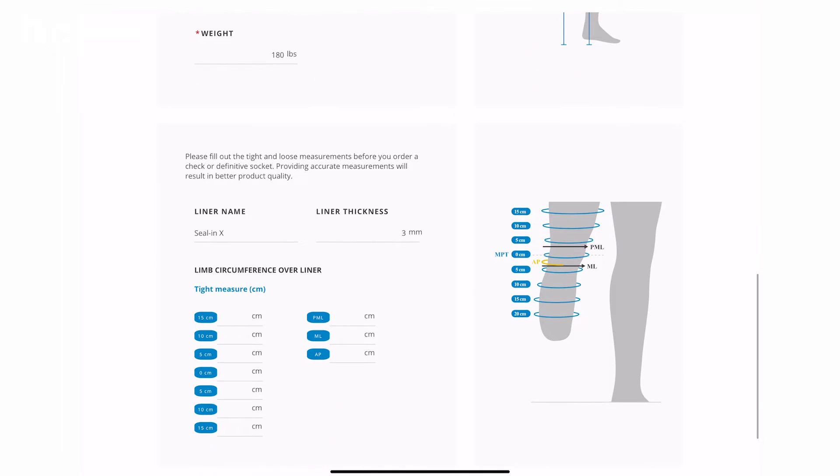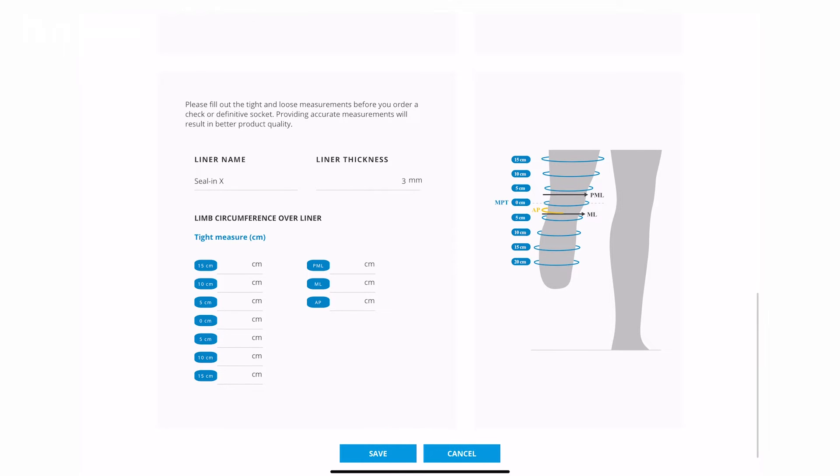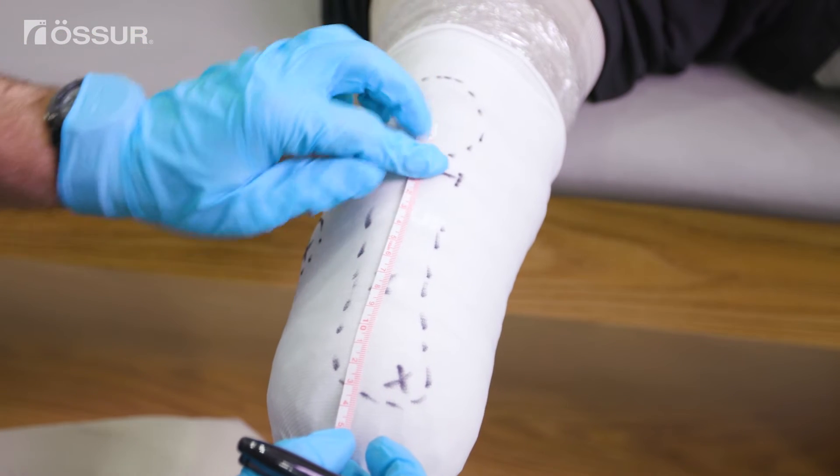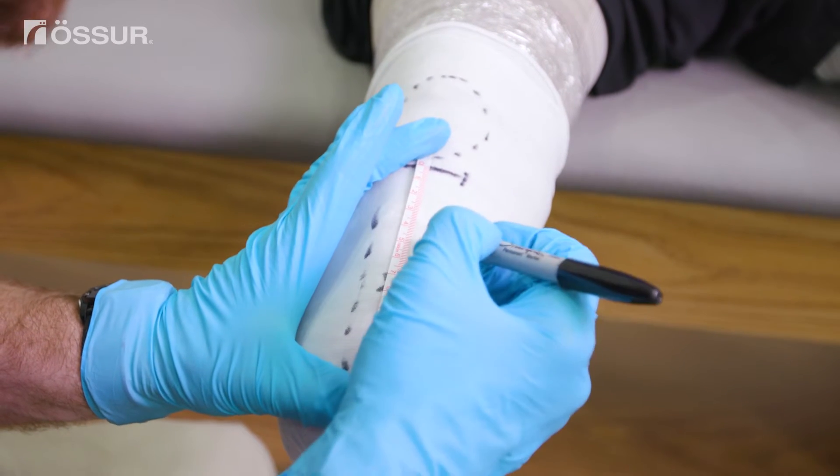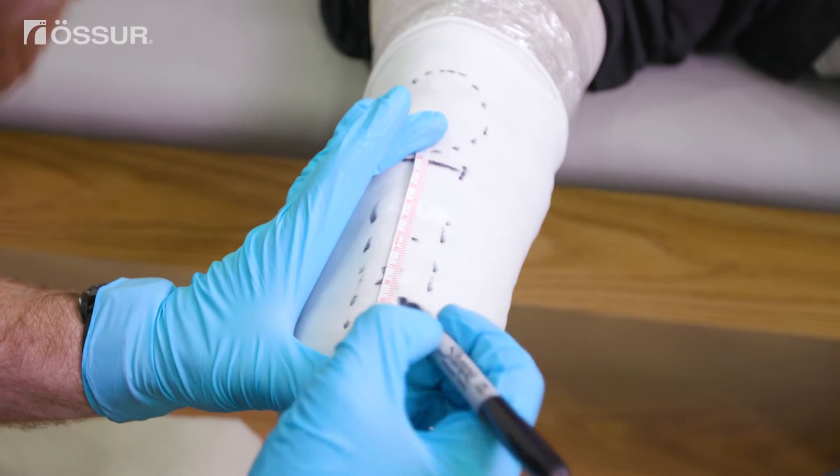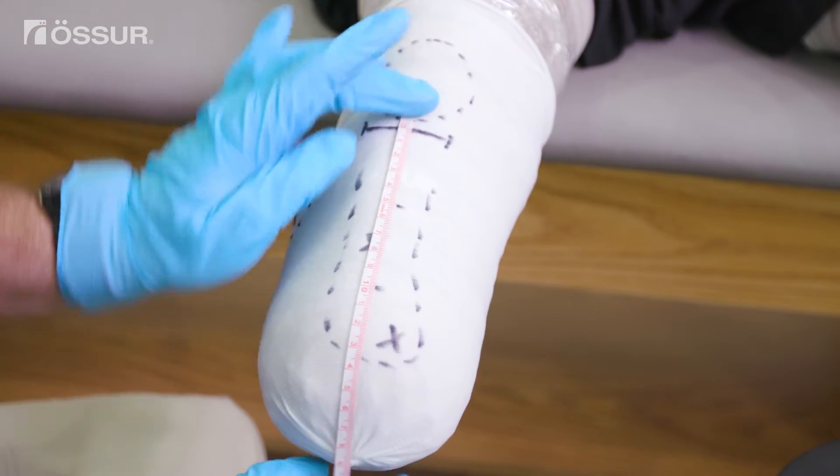The next step is to mark where to take the measurements. Mark every 5 centimeters above and below the MPT as appropriate for that socket design. Then measure the circumference at each of these locations, starting with the MPT.